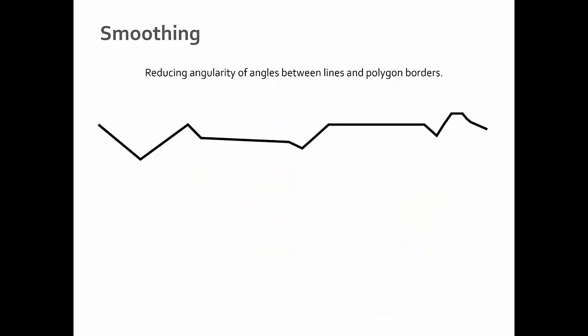Smoothing is another method of geometric generalization, and it's different from simplification. If you look at this line — let's pretend this is a creek running through your neighborhood — it's kind of geometric and doesn't look really natural. It was probably collected when someone went down the creek collecting GPS waypoints. GPS waypoints are very accurate, but they don't really mimic the nature of what's being mapped. Smoothing would be curving this to make it look more like the feature it's representing.